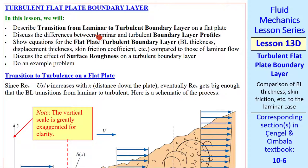In this lesson, we describe transition from laminar to turbulent boundary layer on a flat plate. We'll discuss some differences between the two profiles. I'll show some empirical equations for the flat plate turbulent boundary layer, and we'll compare some properties to those of laminar flow. I'll discuss the effect of surface roughness, and I'll do an example problem, actually two example problems.